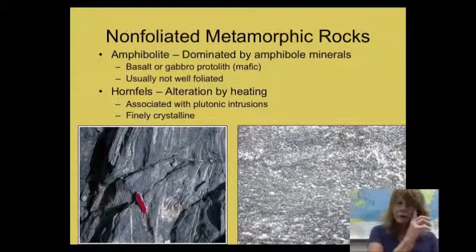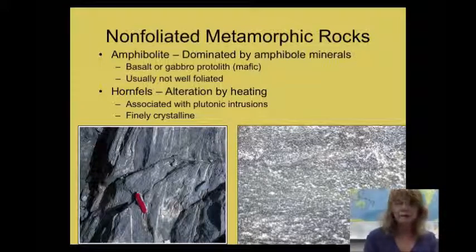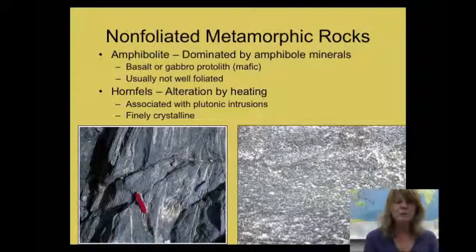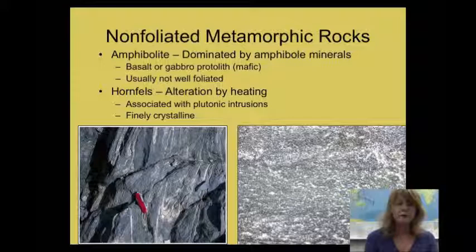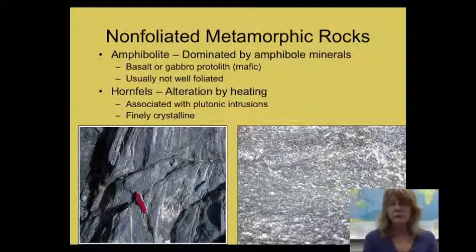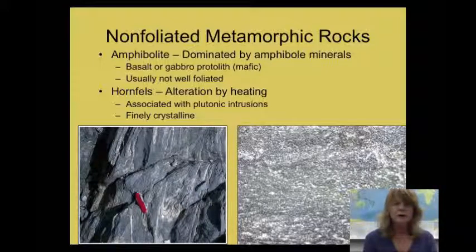There are many other non-foliated metamorphic rocks — some with a little foliation, some with none at all, varying in color from green and red to black and white to nearly solid color. The type of metamorphic rock that results depends on the composition of the parent rock and the degree of metamorphism — how much heat was applied, whether there was directed pressure or just compaction by burial. To identify the other common non-foliated metamorphic rocks, you need to read about their characteristic minerals and textures.